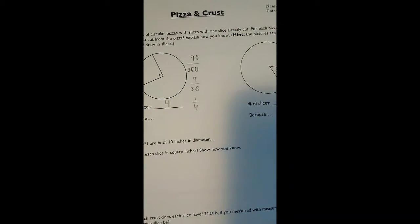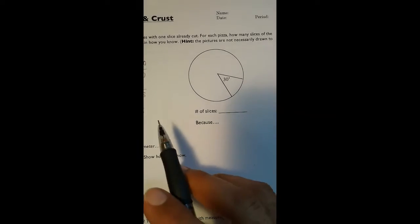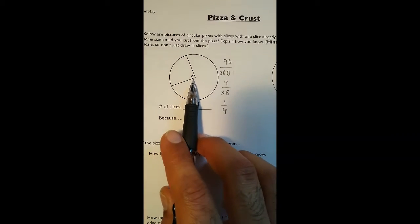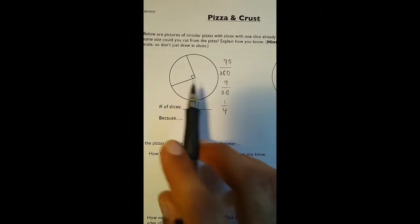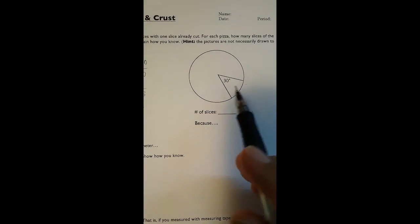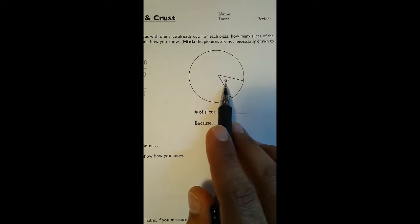Now it's the same thing for this other circle over here. But now, instead of having a 90 degree angle, right? Again, we know this is a 90 degree angle because of the box. The box at the vertex tells us that it's a right angle. And the right angle always has 90 degrees. So if we go back to this other problem, now our slice has a 30 degree angle.